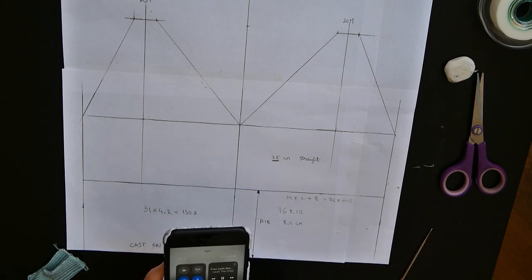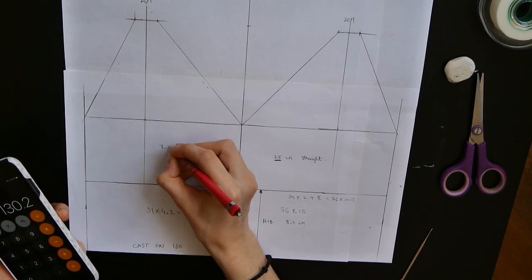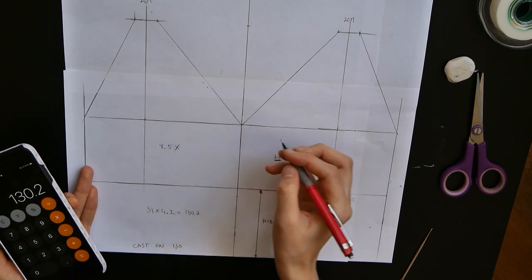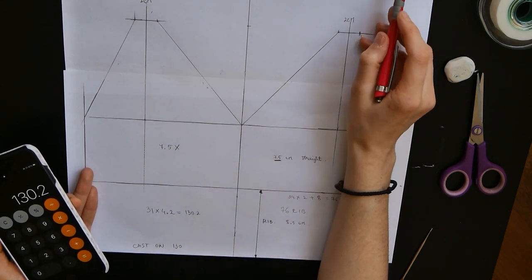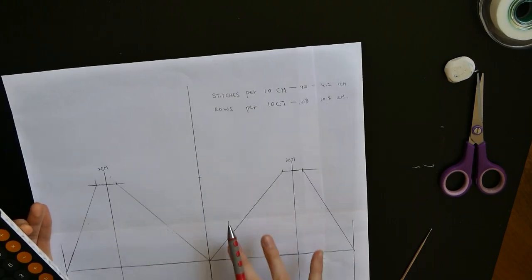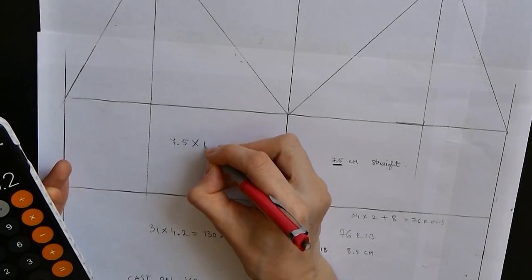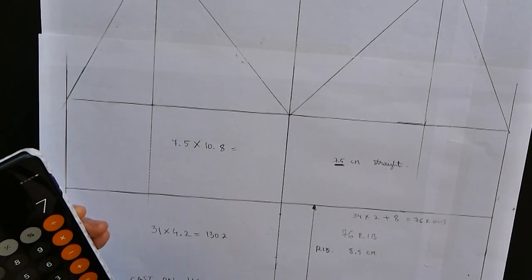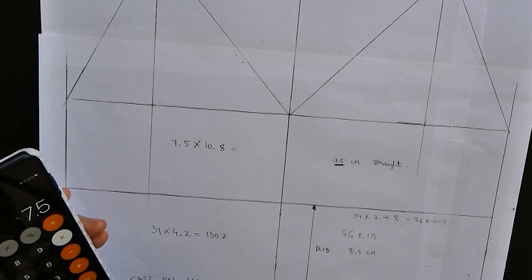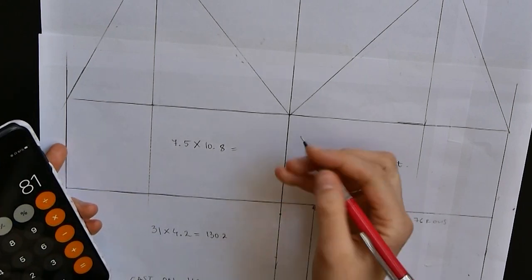Moving on to the next section. This part is 7.5 centimeters and I need to know how many rows I have to knit in order to get 7.5 centimeters. So I'm going to calculate 7.5 times 10.8 and that equals 81. That means I have to knit 81 rows until I start shaping.